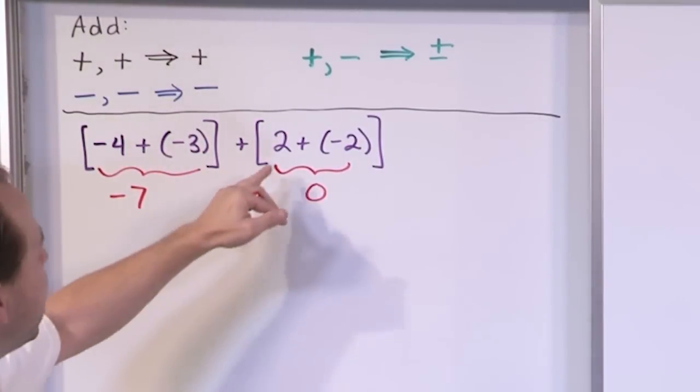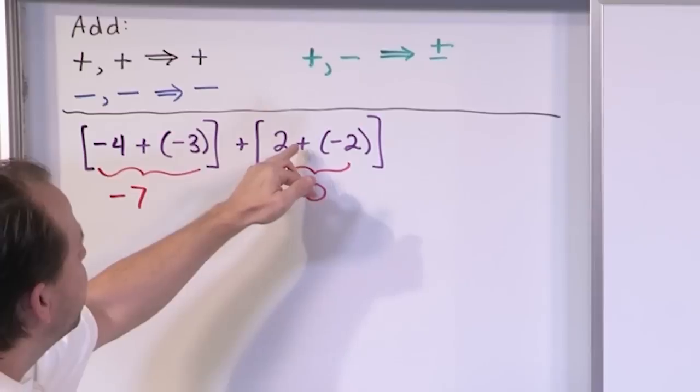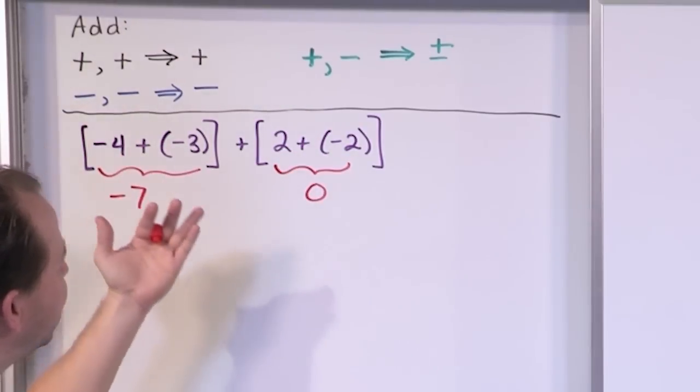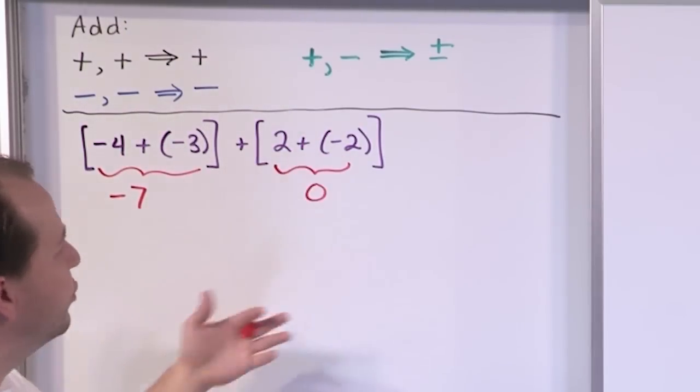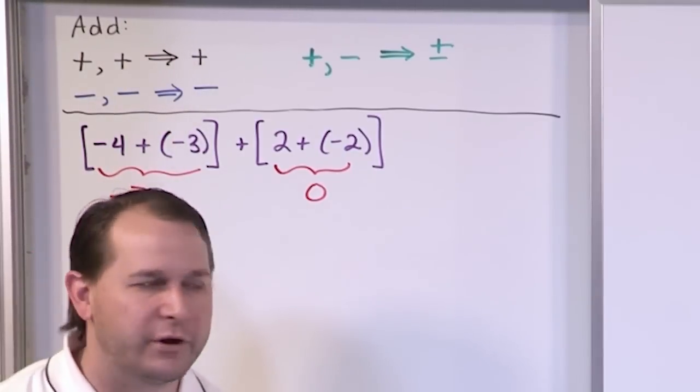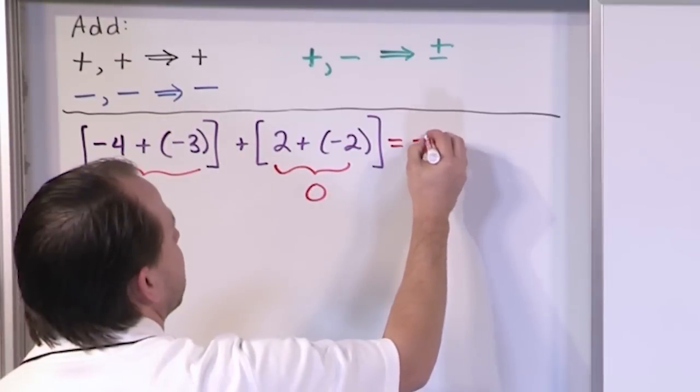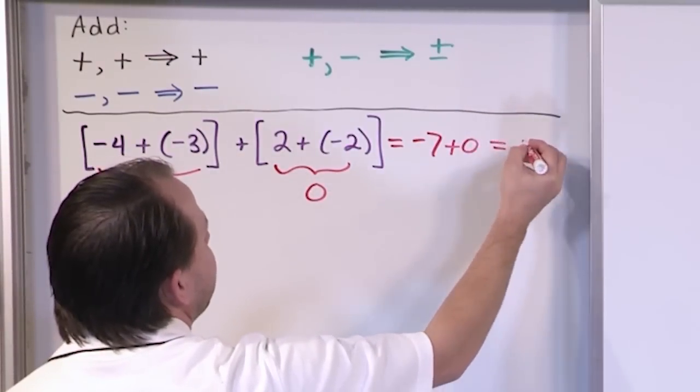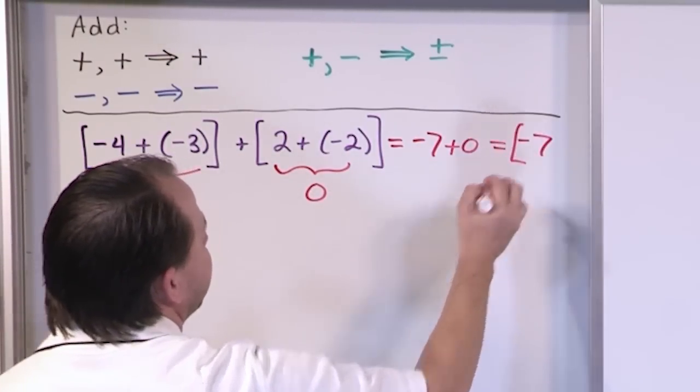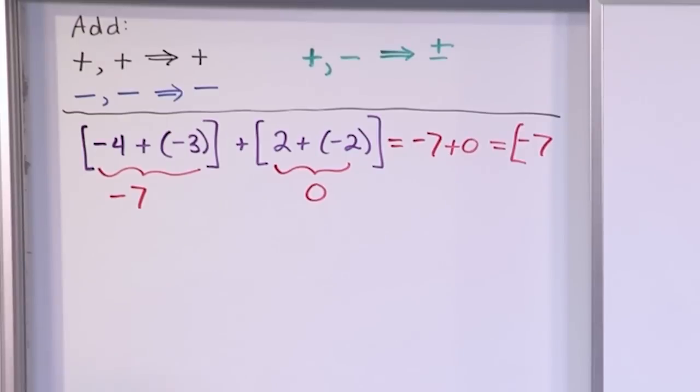Once you get 0, it's the same thing. And if you look at this, 2 plus a negative 2 is the same thing as 2 minus 2. 2 minus 2 is 0. So once you get 0, you're just stuck with it. And then finally what you have here is negative 7 plus 0. Anything plus 0 is itself. So the answer there is negative 7.